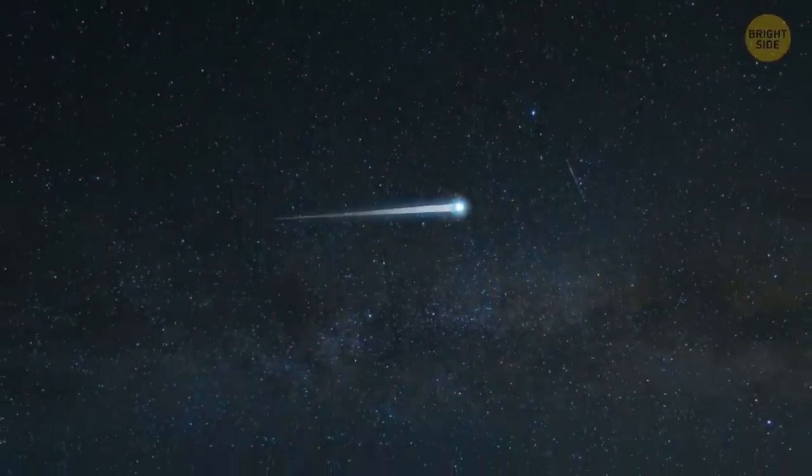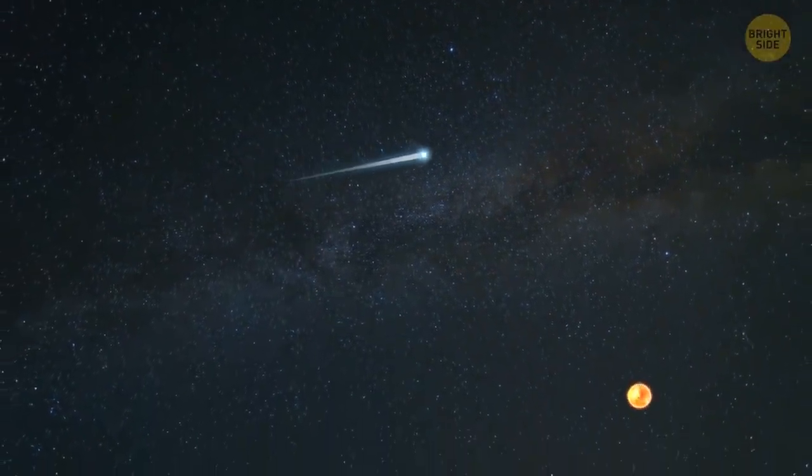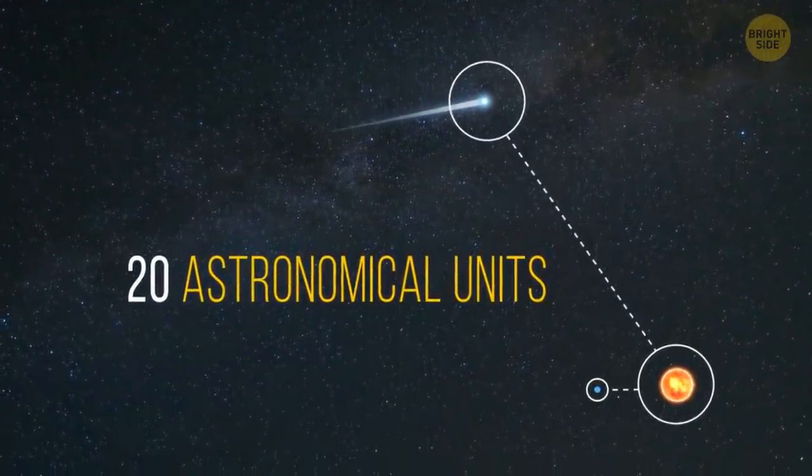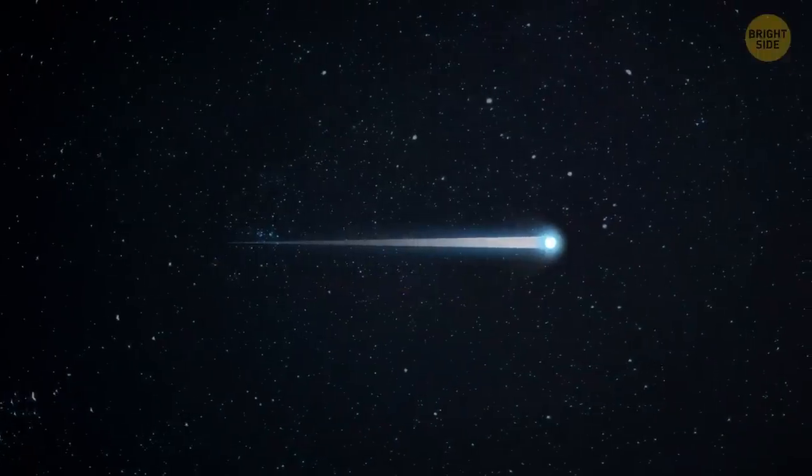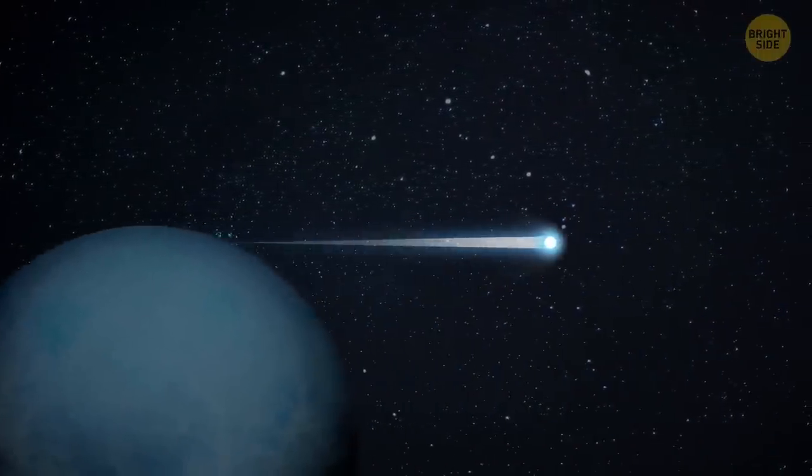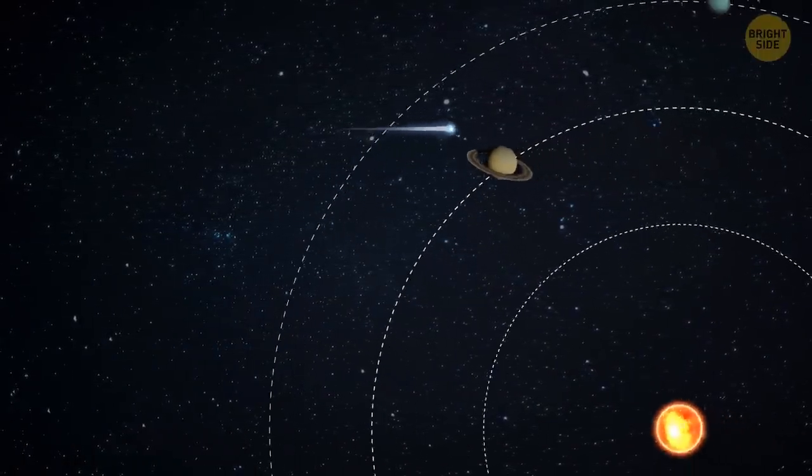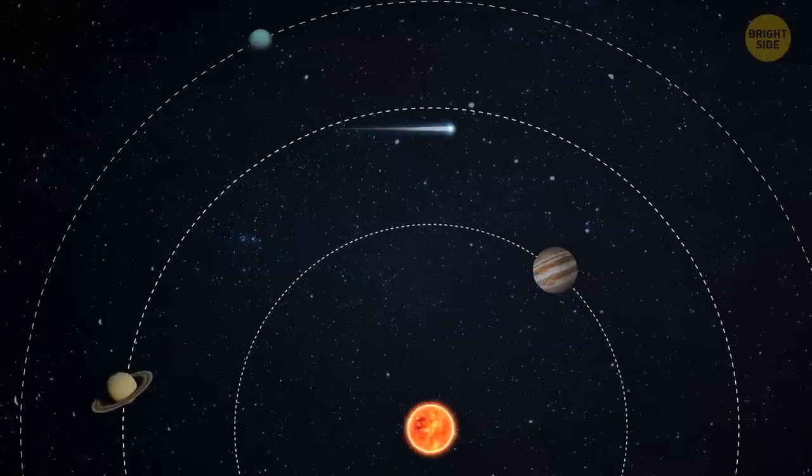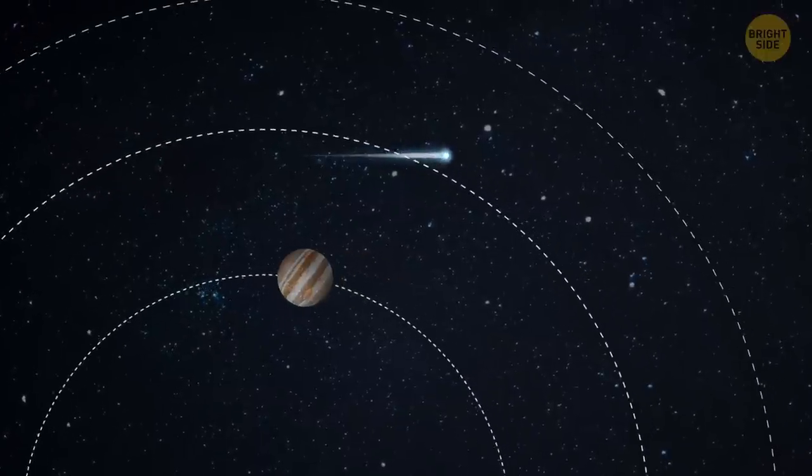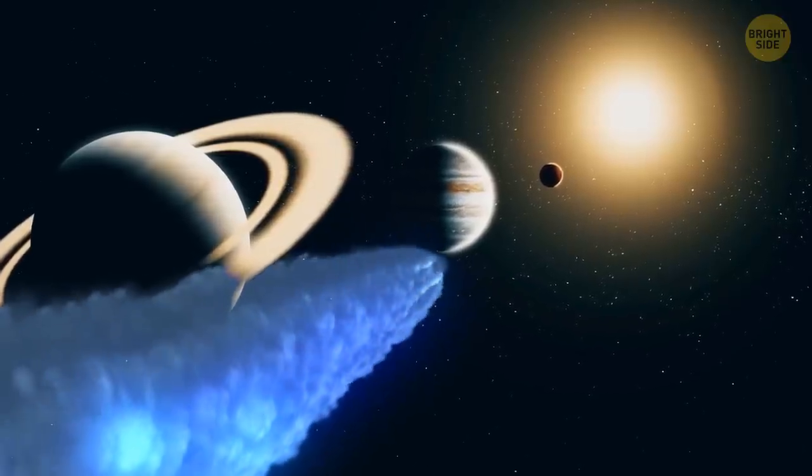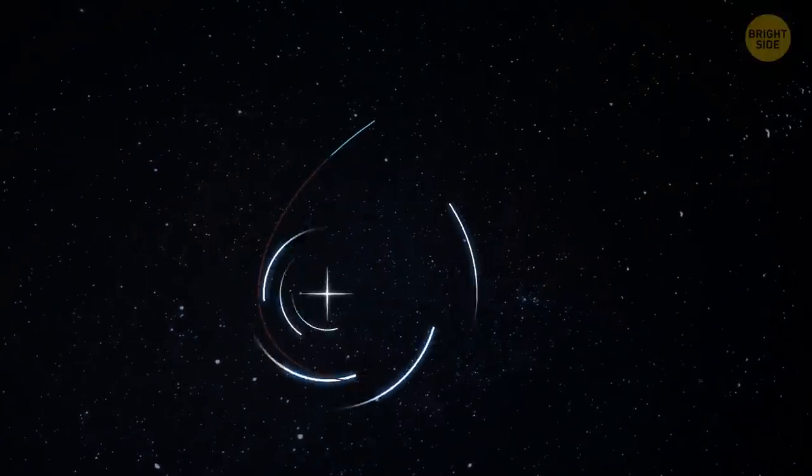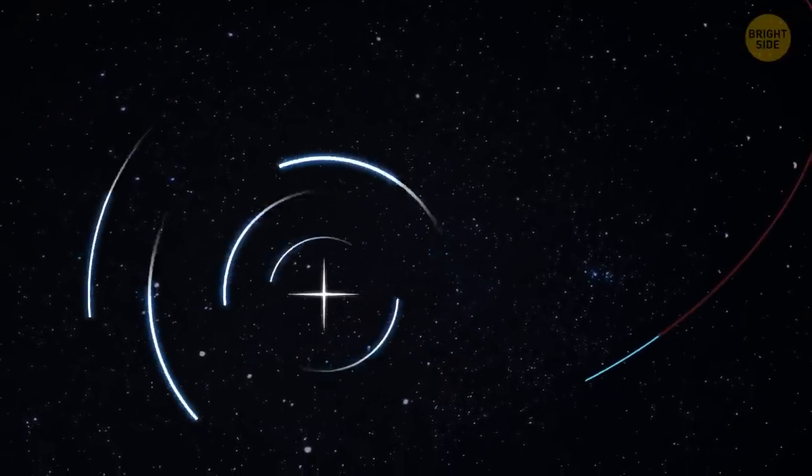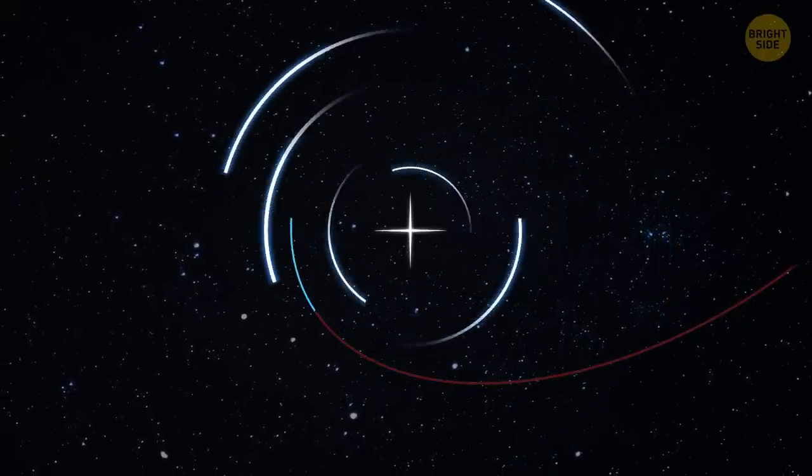Fortunately, Bernardinelli-Bernstein isn't going to approach Earth. Right now, the comet is about 20 astronomical units away from the sun. That's 20 times the distance from Earth to the sun. It means the comet will soon cross the orbit of Uranus. In 2031, it'll be 11 astronomical units away from our star. That's just outside Saturn's orbit. This is going to be the closest Bernardinelli-Bernstein will approach the sun. Then it will begin its flight back to the edge of the solar system. But the comet is bound to return again. It'll move away from the sun and slow down until the star's gravity pulls it back. Then the comet will make another circle around our solar system. But that will take about 3 million years.